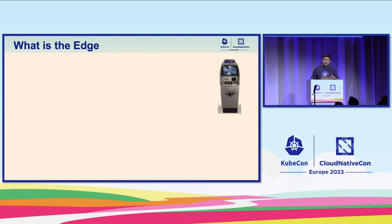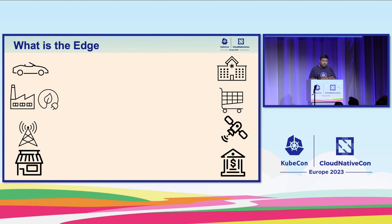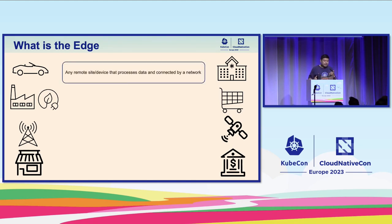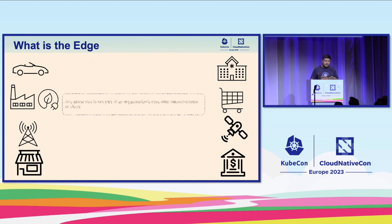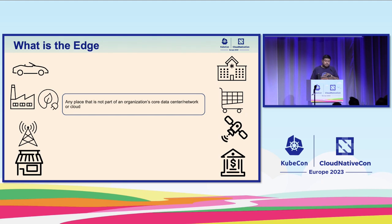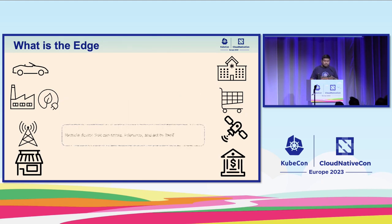At SUSE, we actually asked folks and organizations what they define as the edge. We got several answers from that survey. It could be any remote site or device that processes data and connected by a network. Some said it's any place that's not part of the organization's core network, DC, or cloud. Or it could be any remote device that can sense, infer, and act by itself.